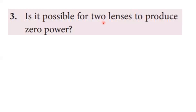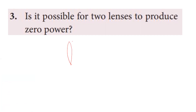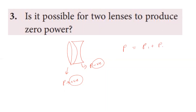Third question: is it possible for two lenses to produce zero power? Yes, it is possible. We combine a convex lens and a concave lens. A concave lens has negative power and a convex lens has positive power. The total power of the combination equals the sum of individual powers. If we choose equal and opposite values, the total power is zero, and the combination acts as a glass sheet.